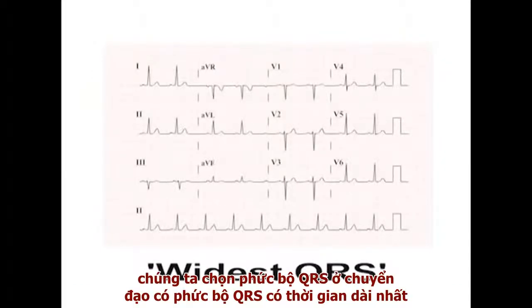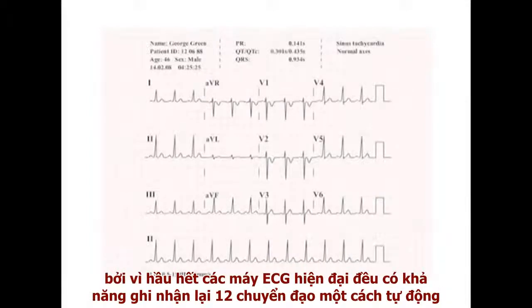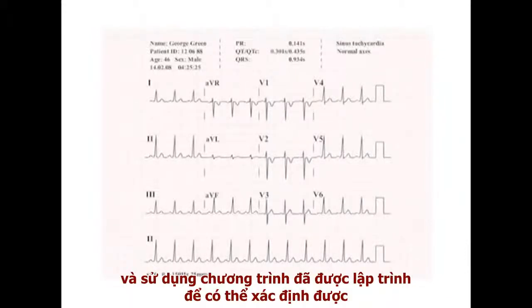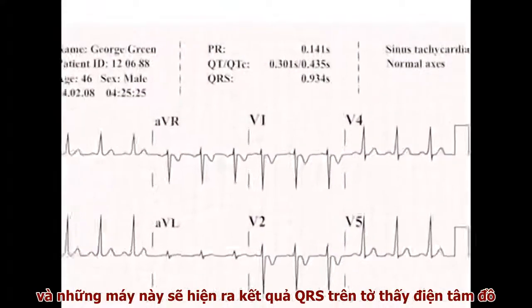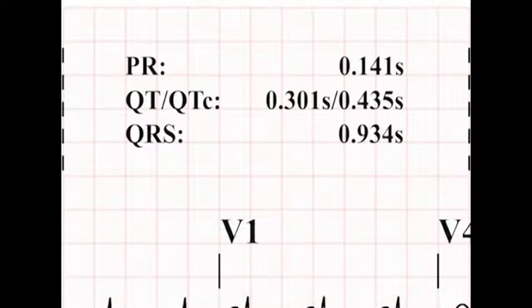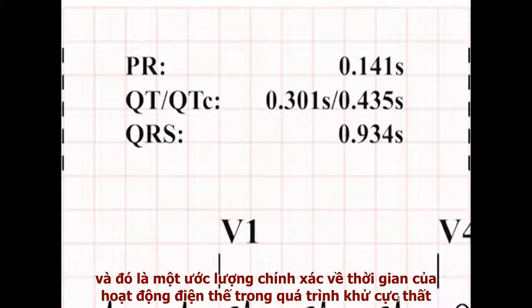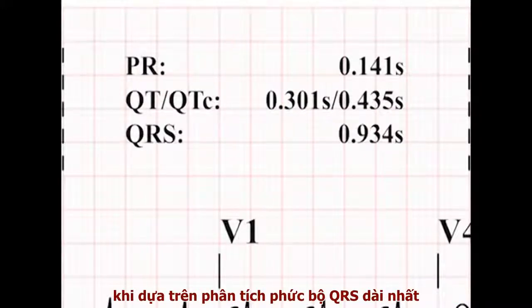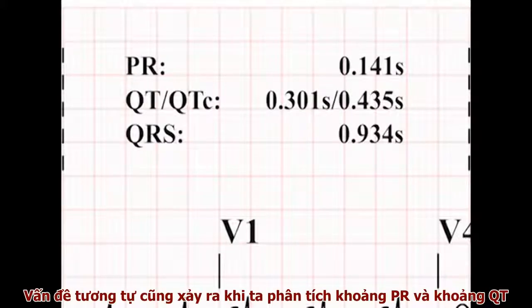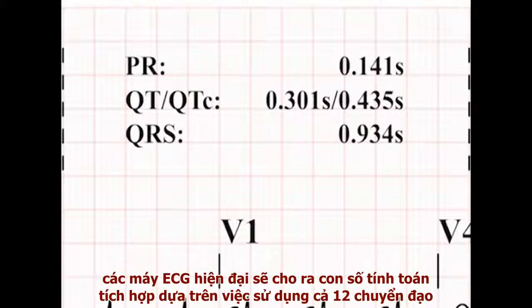When analysed manually, the width of the QRS complexes in the lead with the widest complexes defines the QRS duration on the ECG. Most modern digital ECG machines record all 12 leads simultaneously, using computer programmes to identify the times of the earliest and latest deflections of the QRS complexes in all leads, and report this integrated QRS duration on the printout. This tends to represent an accurate estimate of the duration of all ventricular depolarisation events, and will always tend to be longer than the human estimate. The same problems exist for the PR interval and QT interval, and modern machines present an integrated value calculated using all 12 leads.